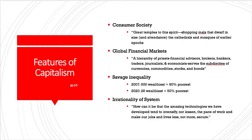The second feature of capitalism is the global financial markets. Here we're not just talking about globalization, but the way that financial markets themselves have become globalized and have taken over the way that economies and societies generate profits. David makes a religious image again: he says there is a hierarchy of priests, including financial advisors, brokers, bankers, traders, journalists, and economists that serve the sub-deities of currencies, commodities, stocks, and bonds. He was writing this originally before the economic crisis of 2007, then revised it after. We're living in 2020, and we really see this idea of sub-deities of stocks and bonds — the market is considered to be doing well even though people are working low-end, part-time, precarious jobs.